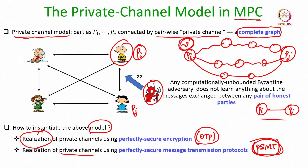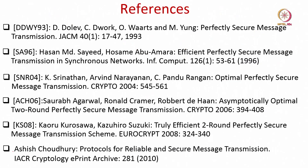So from now on, whenever we say we are in the private channel model, we assume the underlying communication graph is a complete graph with a dedicated pairwise secure private channel between every pair of parties, and we will design MPC protocols assuming such a network using either mechanism. The area of perfectly secure message transmission is a fundamental problem in secure distributed computing with several important results. These are some references you can use to learn more about the perfectly secure message transmission problem. Thank you.